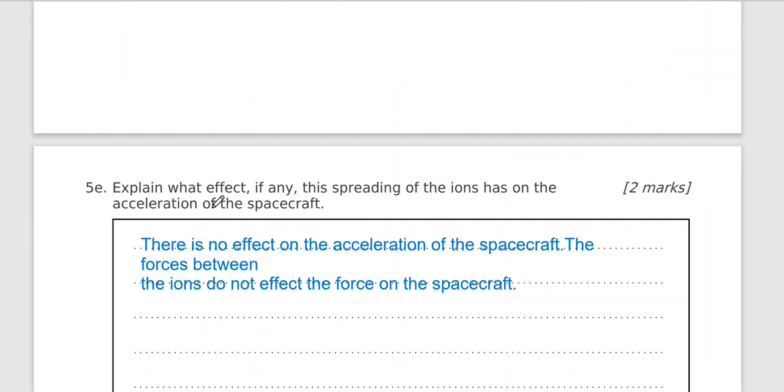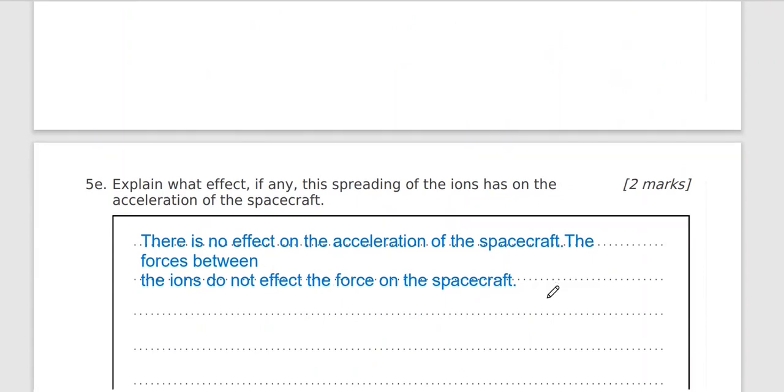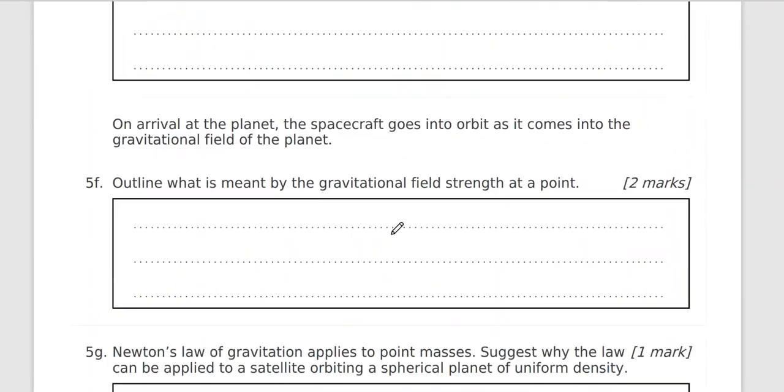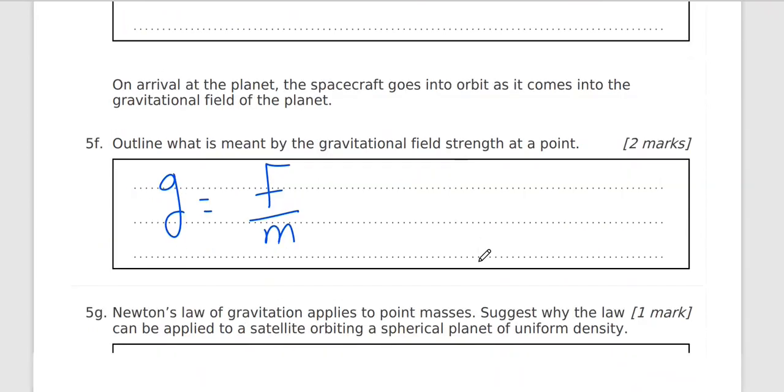Okay, explain what effect this spreading of the ions has on the acceleration of the spacecraft. There is no effect on the acceleration. Okay, what is meant by gravitational field strength? This is from topic six, circular motion gravitational field. It's force per unit mass, force per unit mass.